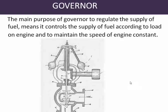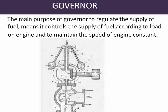Our next part is the governor. The main purpose of the governor is to regulate the supply of fuel — it controls the fuel supply according to the load on the engine and maintains constant engine speed. Here you see the diagram of a centrifugal governor, one type of governor. It extends when the load is more and contracts when the load is less, controlling the fuel supply to the engine.